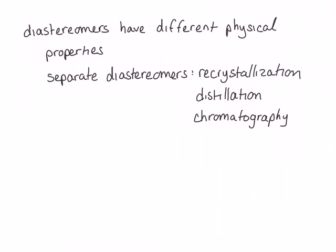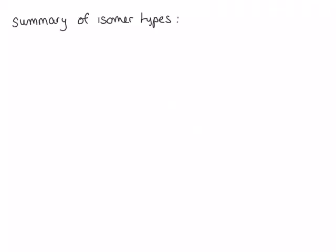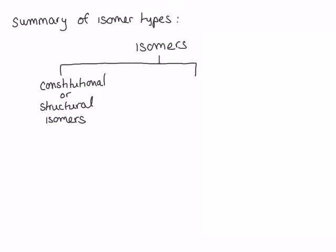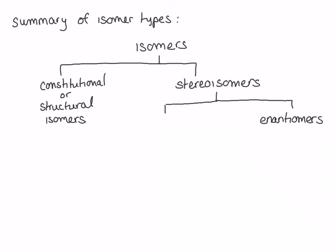Separating enantiomers is much more difficult, and will be a topic discussed later. Now let's briefly review the types of isomers we have looked at so far. Isomers are structures that have the same molecular formula but are different compounds. There are two main types: constitutional or structural isomers, which differ in the order of attachment of atoms, and stereoisomers, which have the same order of attachment but a different organization in three-dimensional space. There are two main types of stereoisomers: enantiomers, which are mirror image isomers, and diastereomers, which are non-mirror image isomers.